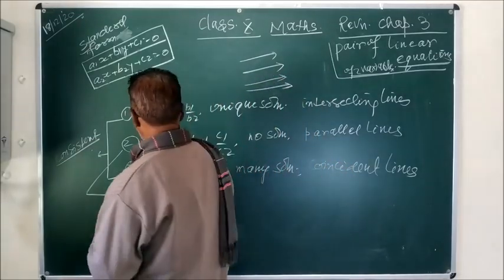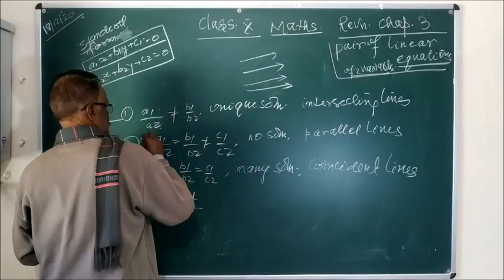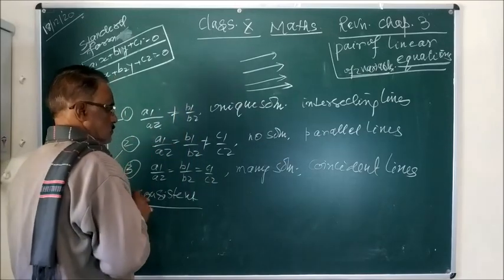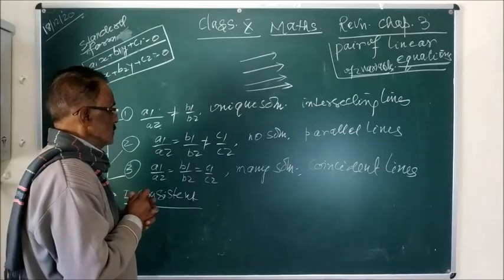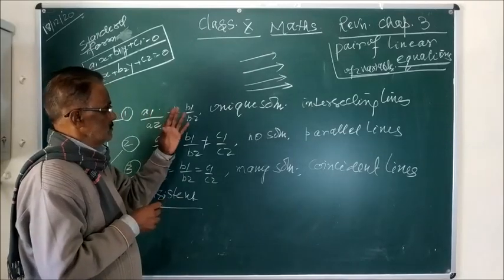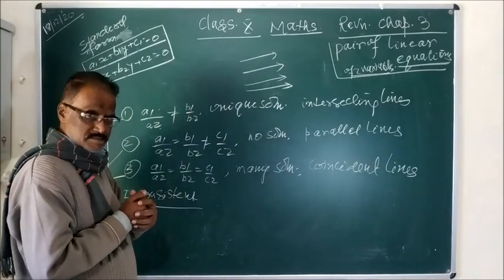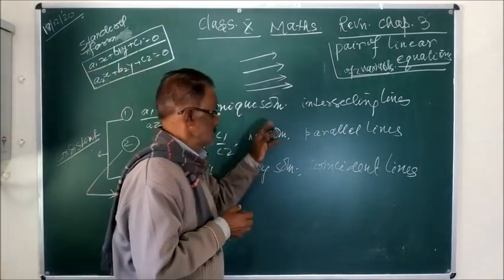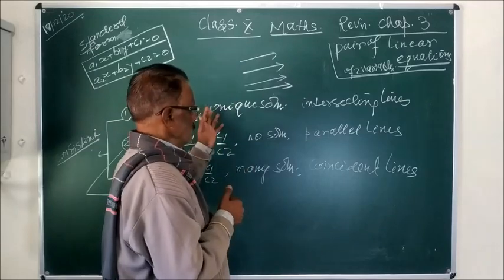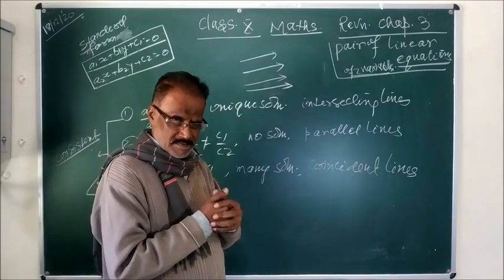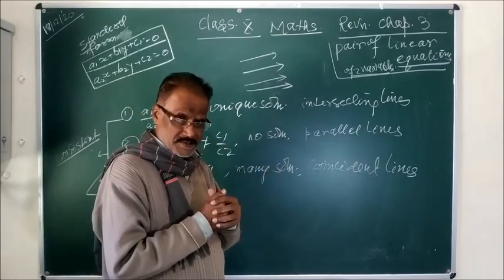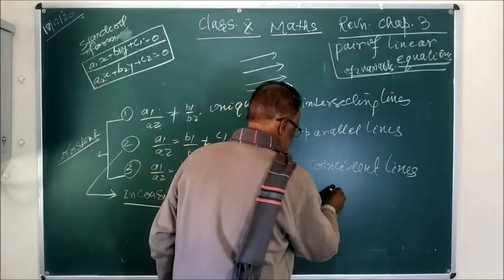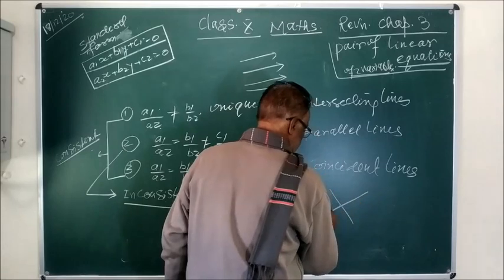This is the first condition: if A1/A2 is not equal to B1/B2, then the equations must have a solution, and therefore they are called to have a unique solution. And if you represent them through the axes using the graphical method, you will get intersecting lines.